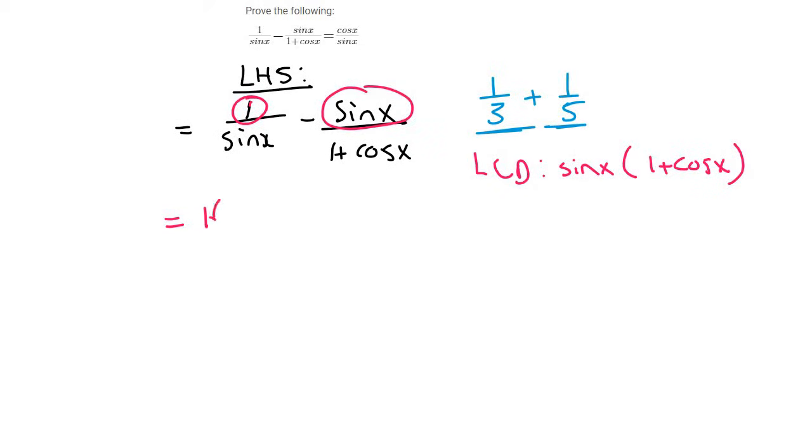So we're going to end up with 1 bracket 1 plus cos x minus sin x bracket sin x over the common denominator. We can't ignore the common denominator because we don't have an equation, we don't have an equal sign. What we typically do now is we don't multiply out the bottom part, but we do multiply out the top and then we simplify.